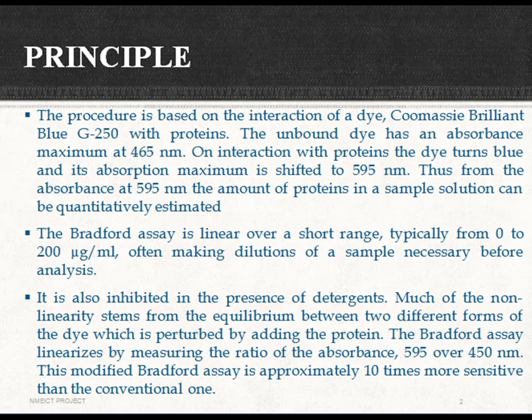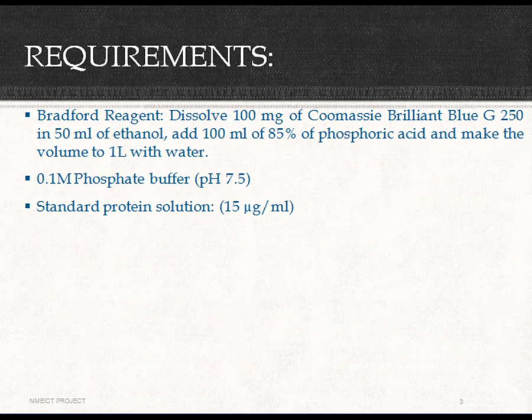The requirements for this method include Bradford reagent, prepared by dissolving 100 mg of Coomassie Brilliant Blue G-250 in 50 ml of ethanol, then adding 100 ml of 85% phosphoric acid and making the volume up to 1 liter with water. Also required is 0.1 molar phosphate buffer at pH 7.5, and a standard protein solution, generally bovine serum albumin.